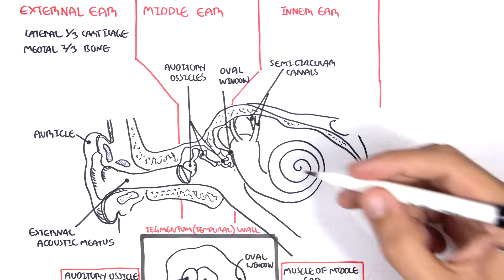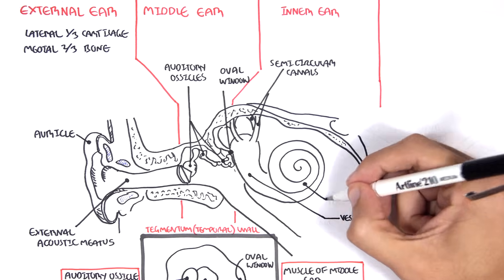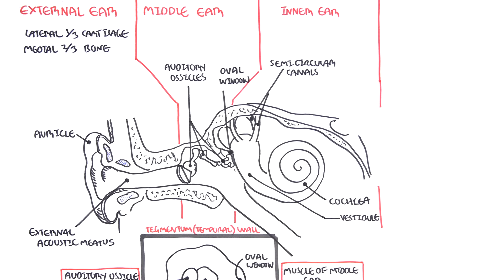The vestibule which is important for balance and then the cochlea which contains the hair cells. And if you remember the physiology of hearing, it's the vibrations coming from the bones in the middle ear that vibrate the fluid within the cochlea which will subsequently move the hair cells which will then send the hearing signals to the brain.